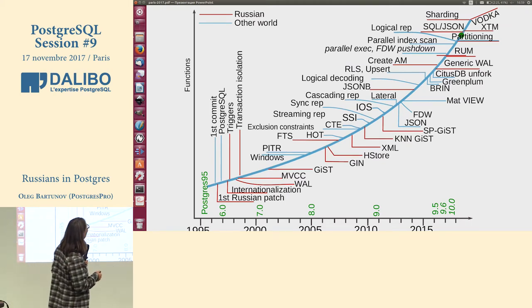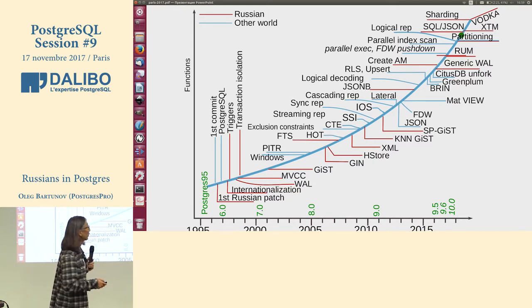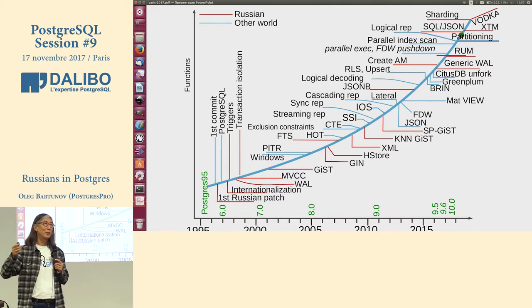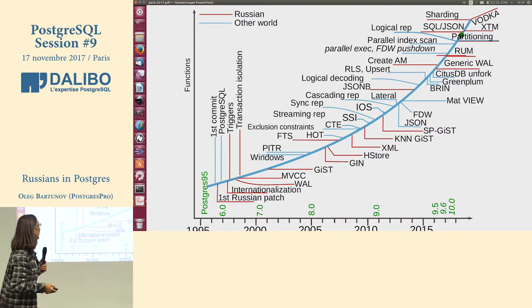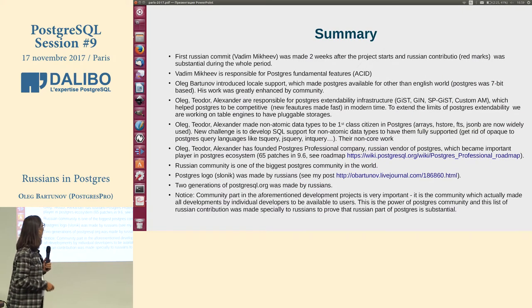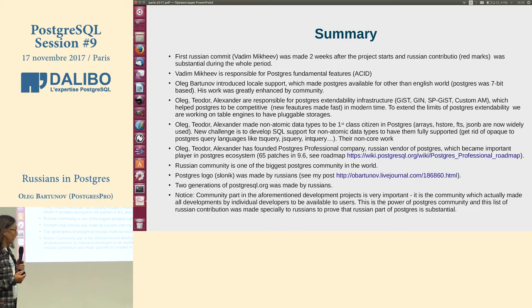We have sharding, we have XTM, and we have Vodka. Vodka, as Alexander said, is our dream — we made a prototype and we understand it is possible, but we have no resources right now.